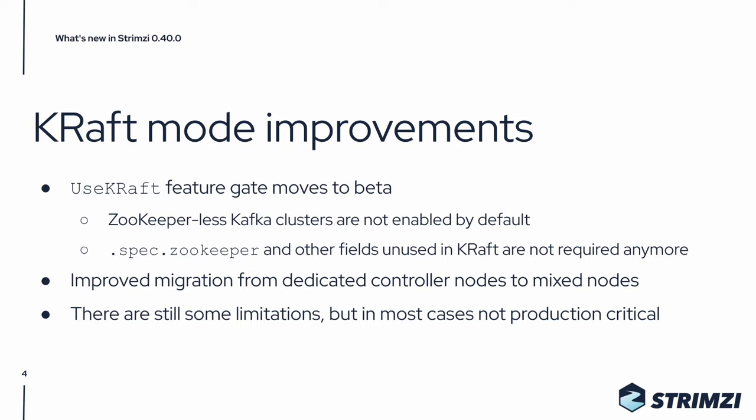We also improved the migration from dedicated controller nodes to mixed nodes. There are still some limitations, both in Apache Kafka as well as in Strimzi, but in most cases they are not production critical. They include, for example, scaling of the controller nodes or support for JBOD storage.